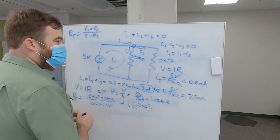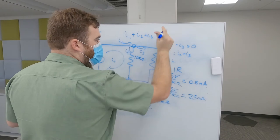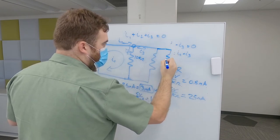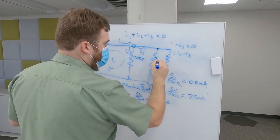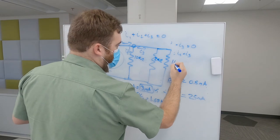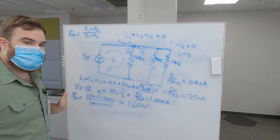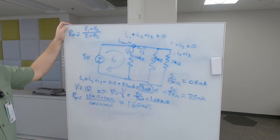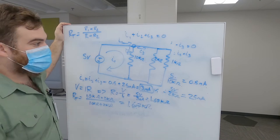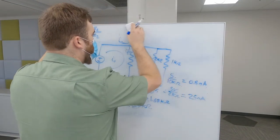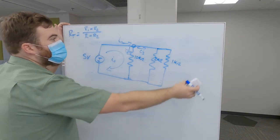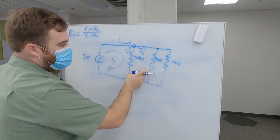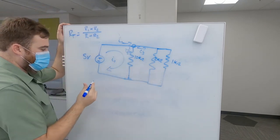But what would happen if we added a third resistor here? So this one's 2 kilohms. Let's call this one 1 kilohm. What would happen? How would you solve this? Surely you can't just use this equation again. Well, I guess you can. And we can do that by doing 2 and then that total with the last one. Let me show you how we do that.